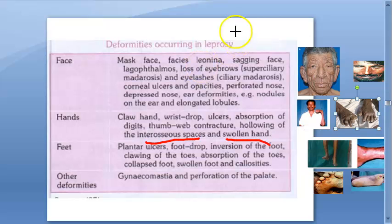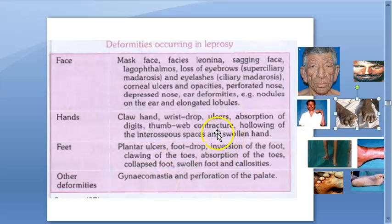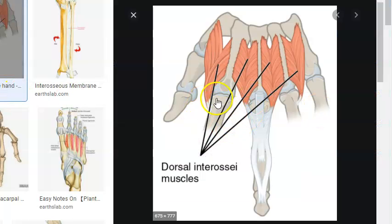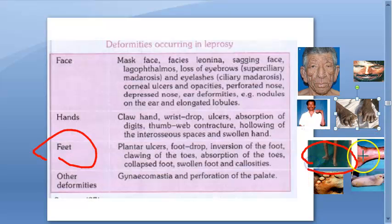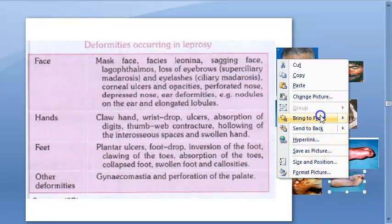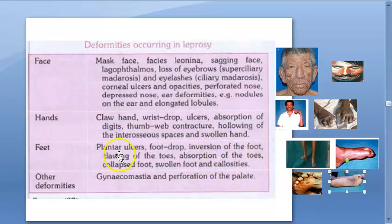Now let's move on to the feet. To recap the hand: claw hand, absorption of digits, wrist drop, thumb web contracture, hollowing of interosseous spaces, and swollen hand. For the feet: there can be foot drop, plantar ulcer, inversion of the foot, and clawing of the toes.